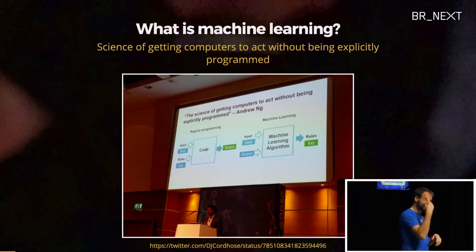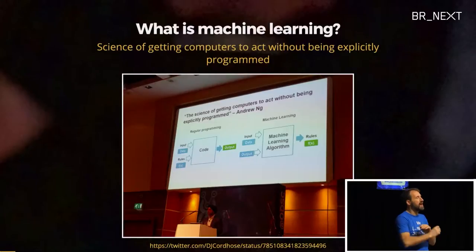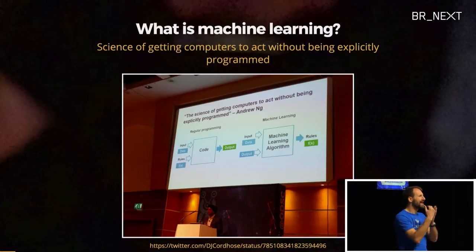On the left side, you see how you would normally write a program. You get some rules from product owners, some input, write some code, and it outputs some stuff. That is regular programming. But in machine learning, you do it the other way around — you get sample input and sample output, and with that, you train a machine to derive some sort of rules or model for what it is supposed to do.